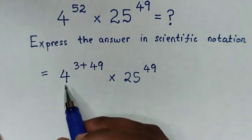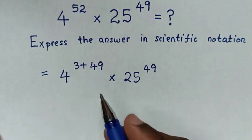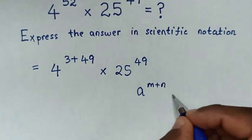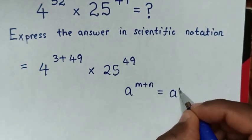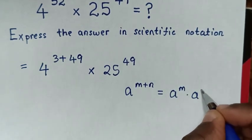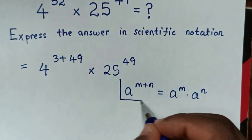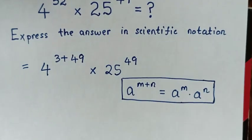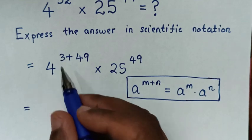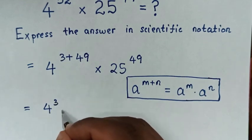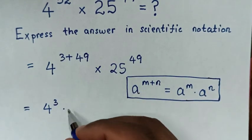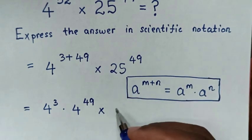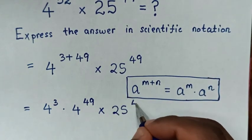Then, in the next step, from here 4 power 3 plus 49 is in the form of a power m plus n, which is equal to a power m times a power n. Then it will be equal to 4 power 3, then times 4 power 49, times this 25 power 49.